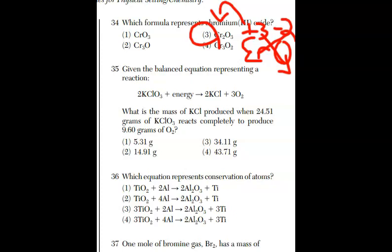For 35, we have a balanced equation. What mass of KCl is produced when we have 24.51 grams of KClO3? I always tell my students, put the numbers above the equation. So 24.51 grams, and it reacts completely to produce 9.6 grams of O2. How many grams? Let's see, what is the mass of the KCl? There we go, there's our X. Well, you don't have to go crazy. This isn't a mass-mass stoichiometry type question. This is all conservation of mass. The mass I start with has to be equal to the mass I end with. In other words, 24.51 is equal to X plus 9.6. Get out your calculator and calculate the answer. Sure enough, I did just that, and the answer is choice 2.